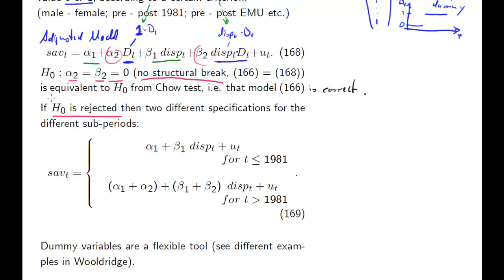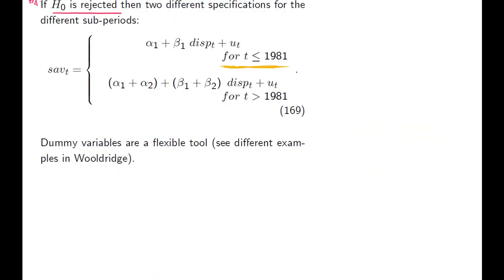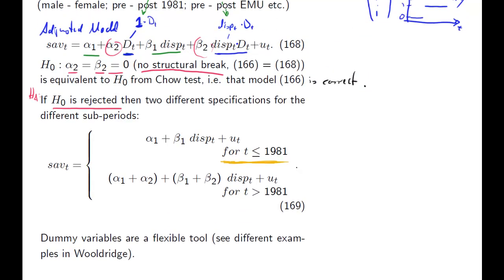If H0 is rejected, by the way how would you test this hypothesis? An F test. Let's think of the alternative hypothesis. If alpha 2 and beta 2 are not equal to zero, then we can differentiate between two cases. Let's firstly think of all observations up to and including 1981. The dummy variable will take the value of zero. That means that alpha 2 times dt will be equal to 0, and disposable income times dt times beta 2 will be equal to 0. All we are left with is alpha 1 plus beta 1 disposable income plus the error term.